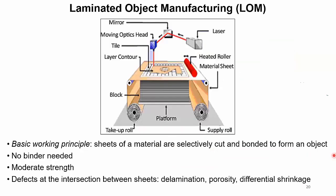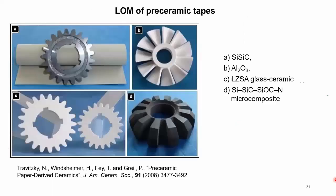The last technology is laminated object manufacturing (LOM), one of the first technologies tested, though not much used today. Here, sheets of material are selectively cut — typically using a laser — and bonded, typically thermally, to form an object. You end up with defects at intersections between sheets and significant limitations on the shape of the final object. These are essentially 2.5D structures, so LOM does not provide all the benefits of additive manufacturing.